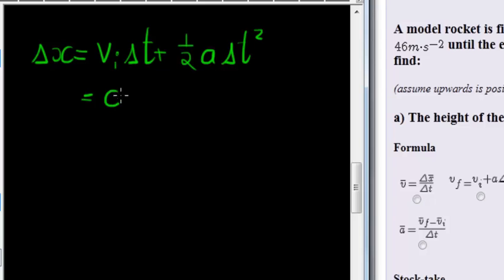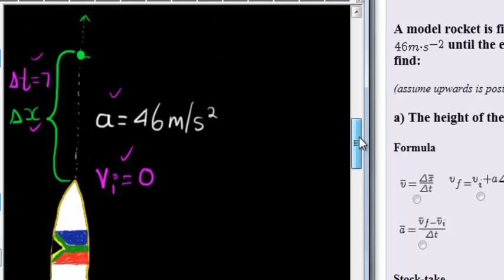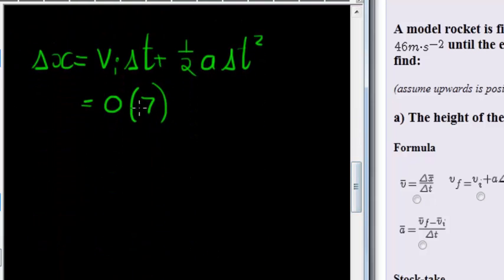Okay, so initial velocity we found was zero, so even though that is seven seconds. Let me just confirm, yes, seven seconds of acceleration, and that part will be zero. A half times acceleration we have as 46 meters per second squared and that is seven squared.